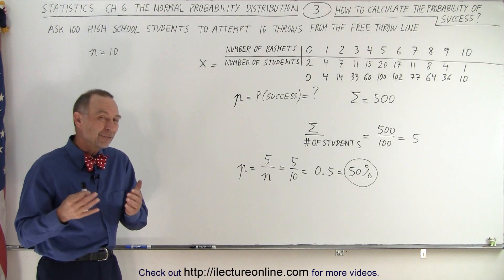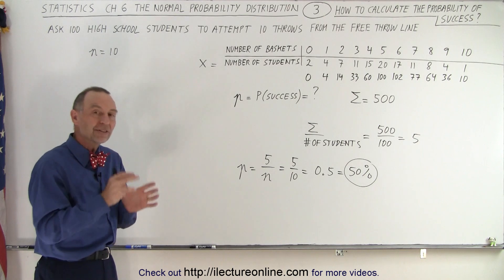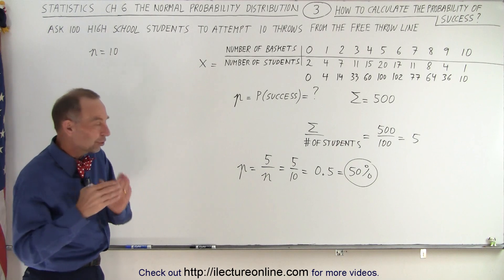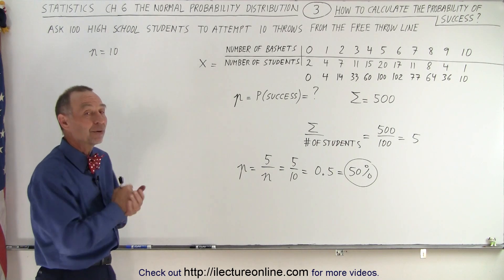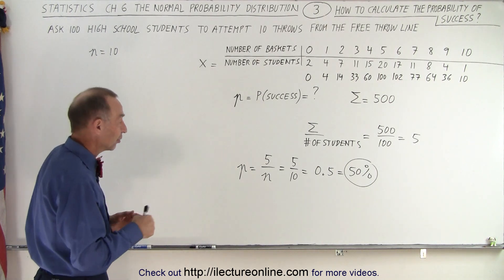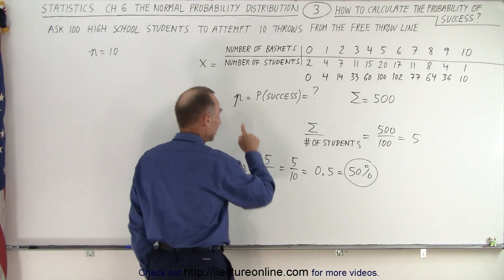So what we're saying here is that with this normal distribution of probabilities, the probability of making a basket at any given time, any one particular student picked at random, and they shoot a basket, the success of shooting a basket is about 50%. They'll make one out of two attempts on average. And so that is what we call the probability of success.